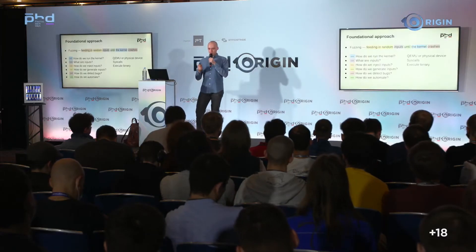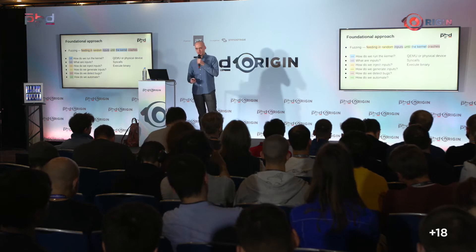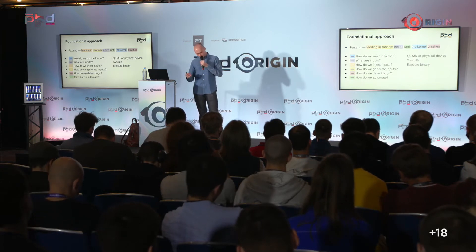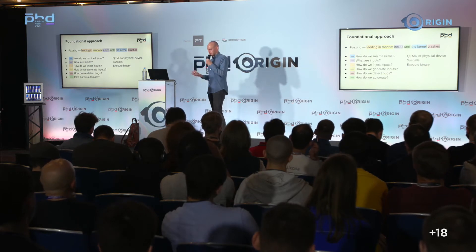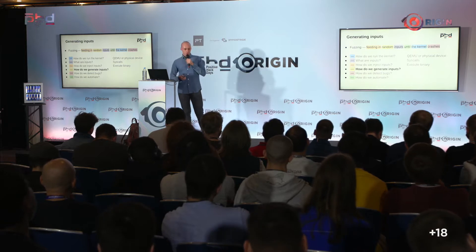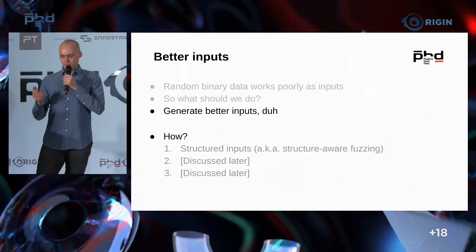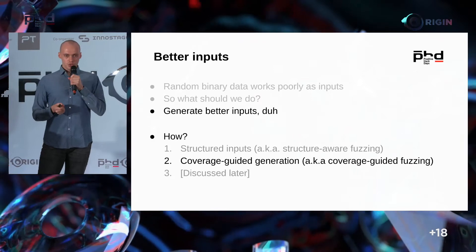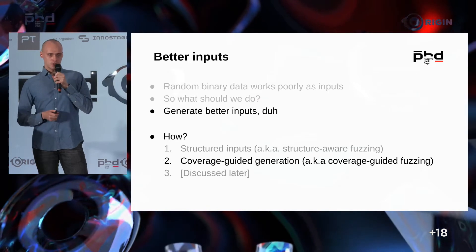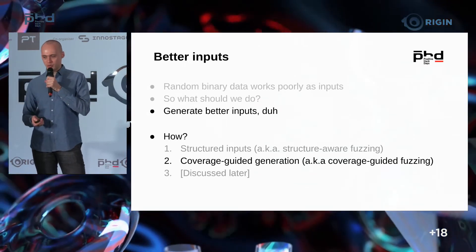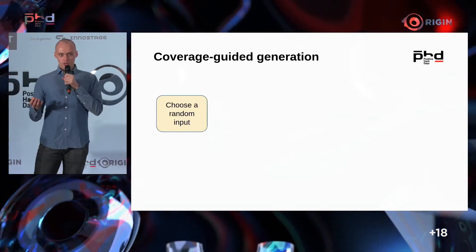Let's make our approach more sophisticated. We'll leave the answers to the first three questions the same — either VMs or hardware, inputs are syscalls, and we use binaries. The second idea for generating better inputs is called coverage-guided fuzzing — fuzzing based on code coverage information. We also generate random inputs, but sometimes we take inputs that are interesting to us.